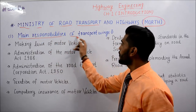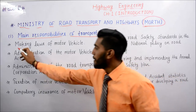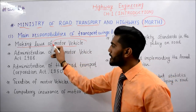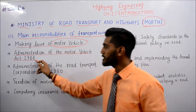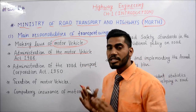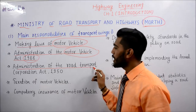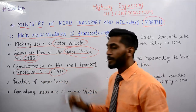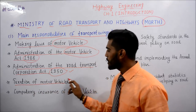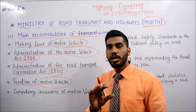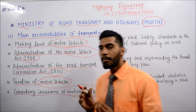अब जानते हैं main responsibilities of Transport Wings. पहली जिम्मेदारी है making laws for motor vehicles. दूसरी है administration of the Motor Vehicle Act 1988. Transport Wings इन्हीं के तहत कार्य करता है, और साथ ही administration of the Road Transport Corporation Act 1950. इसके अलावा, taxation of motor vehicles — motor vehicles पर क्या tax लगना है यह भी Transport Wings बताता है.